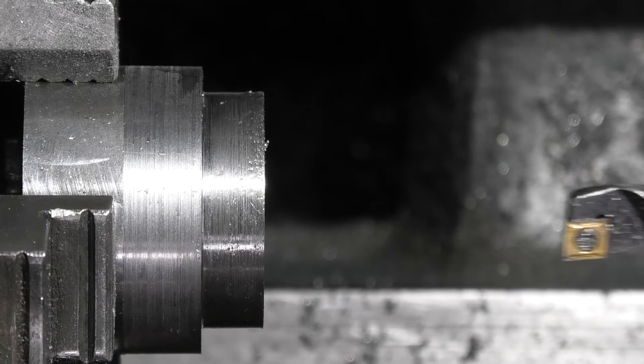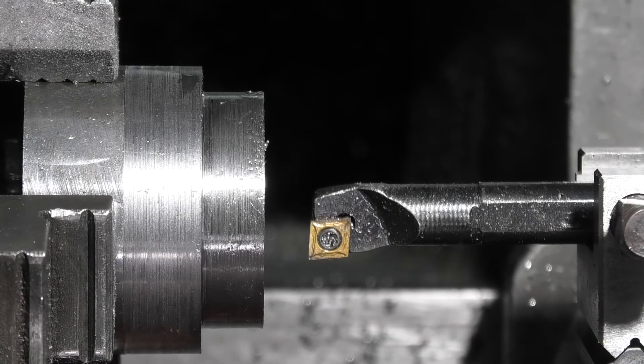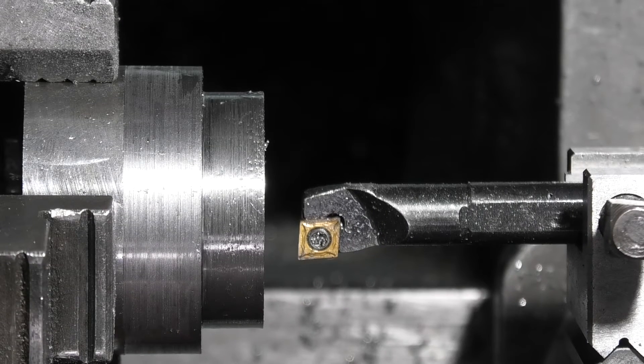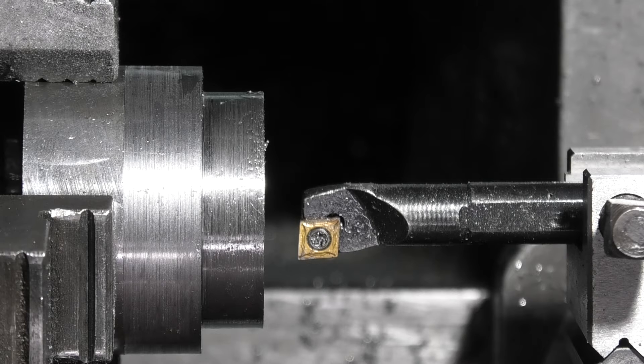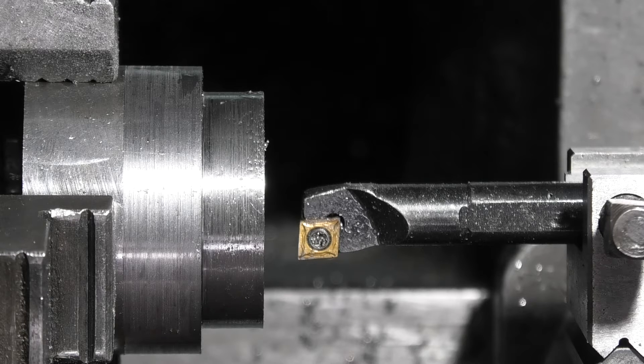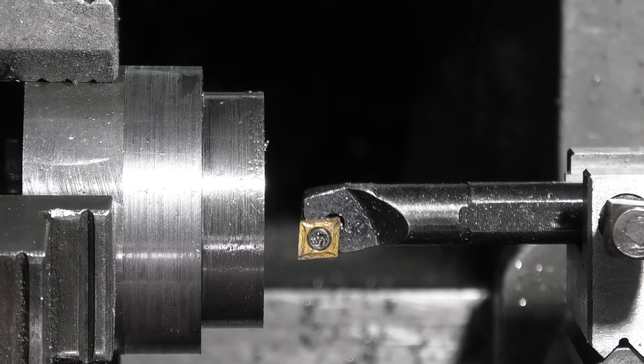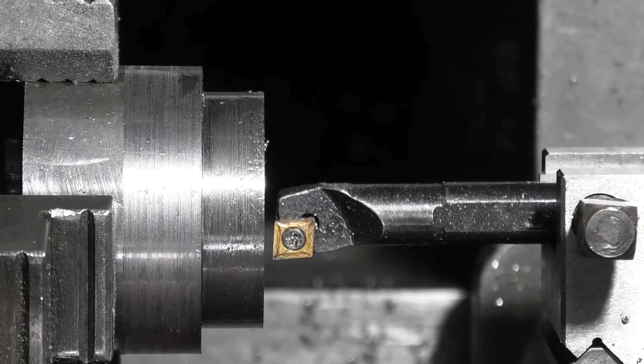Now I've set up my boring bar and I'm just boring this hole out. I drilled it out to a half inch, it needs to be 0.625 which is 5.8. I don't have a 5.8 reamer so I'm just boring it out.